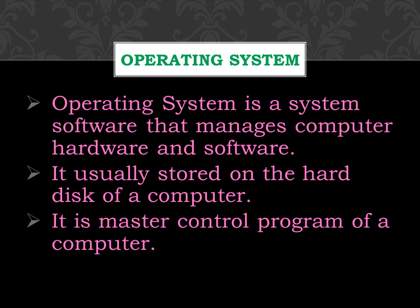Let's see the first topic: operating system. An operating system is a system software that manages computer hardware and software. It is usually stored on the hard disk of a computer. Operating system is the master control program of a computer. It acts as the middleman between the hardware and software.